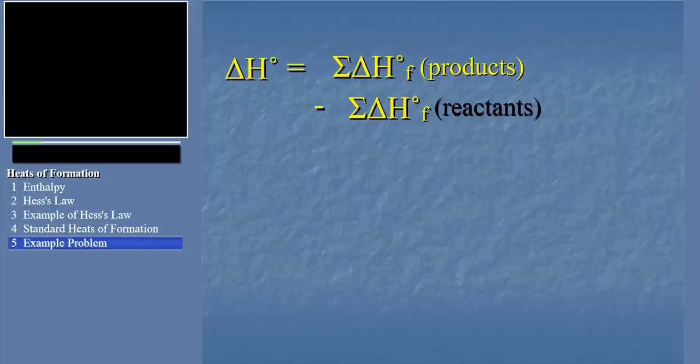So, what do we do with the standard heats of formation? We predict delta H values for other reactions. Indeed, for any reaction. We do this by using the following relationship. The delta H for the reaction is equal to the sum of the heats of formation of the products minus the sum of the heats of formation of the reactants.